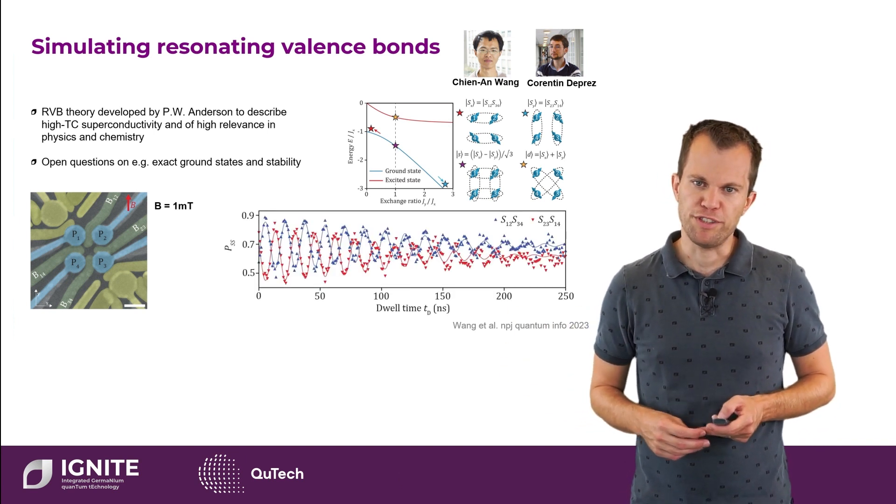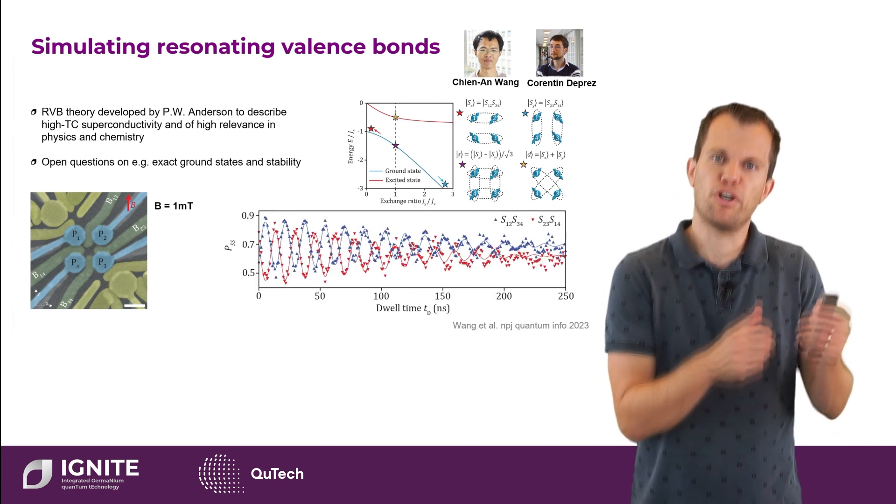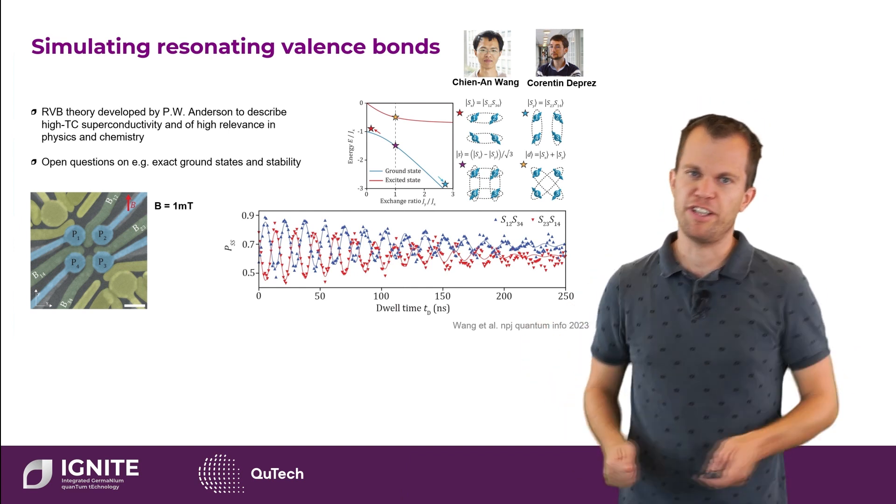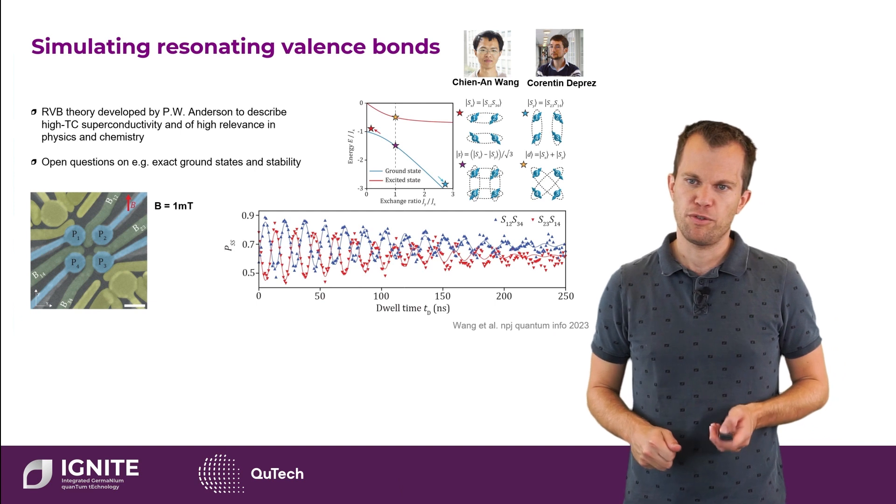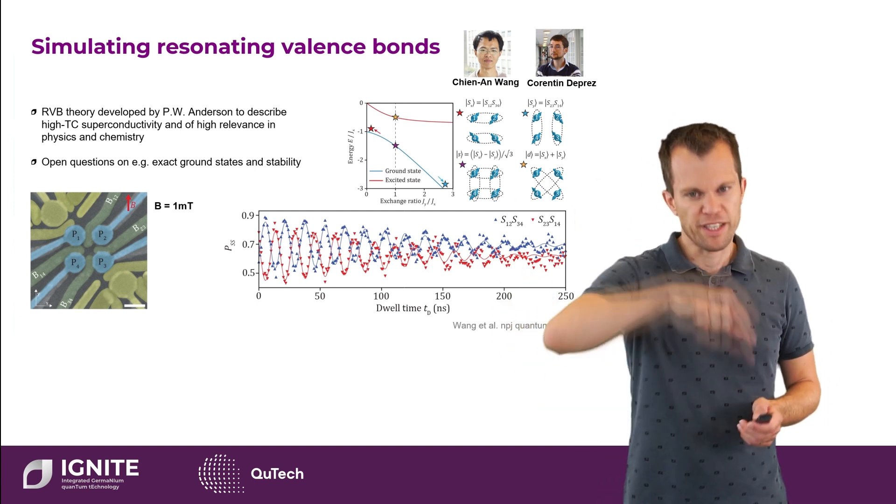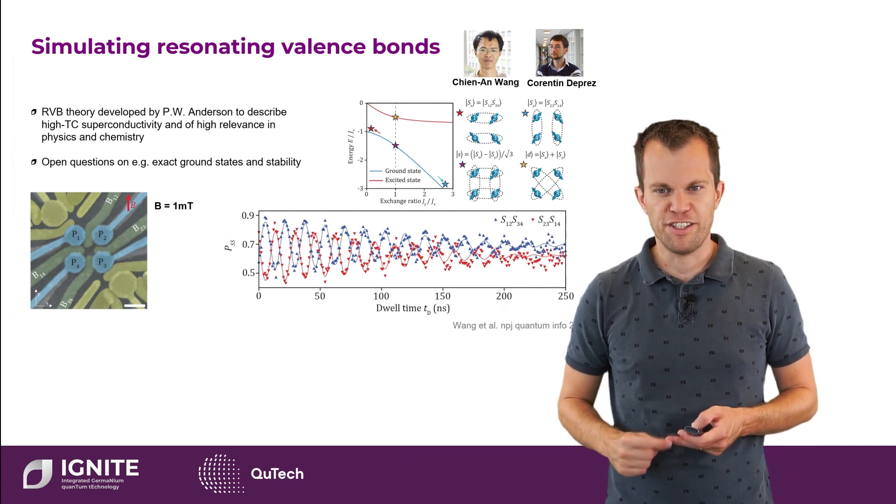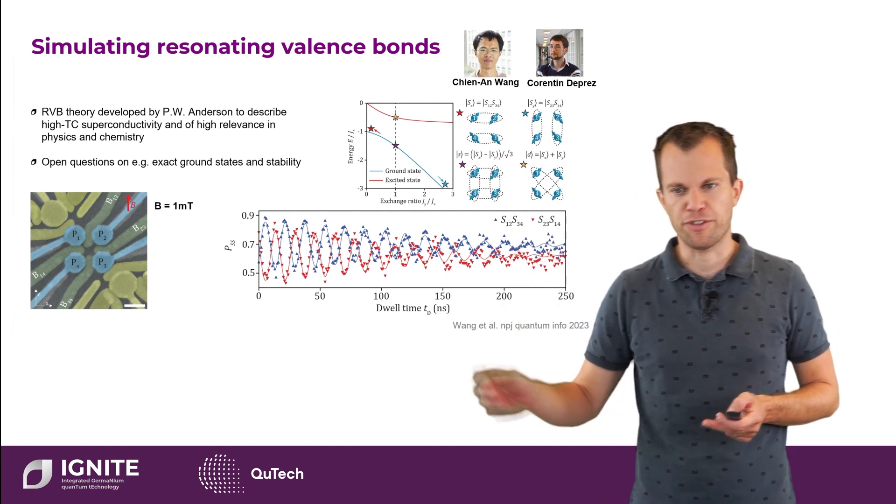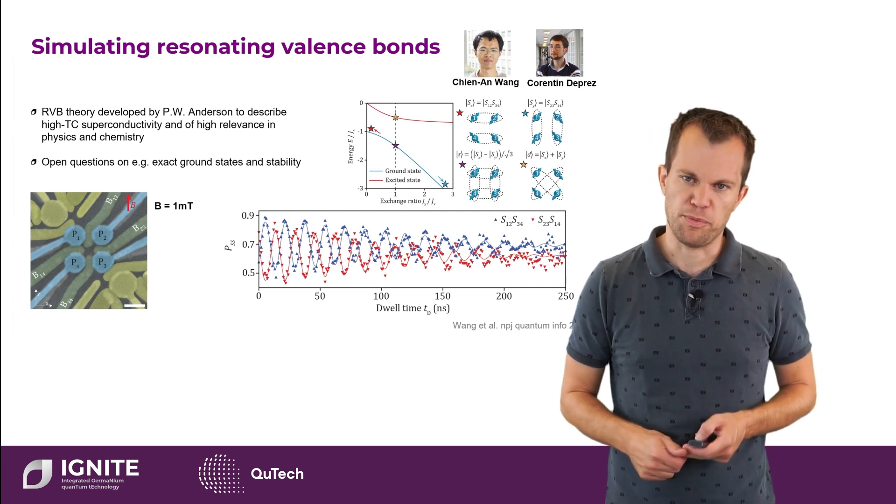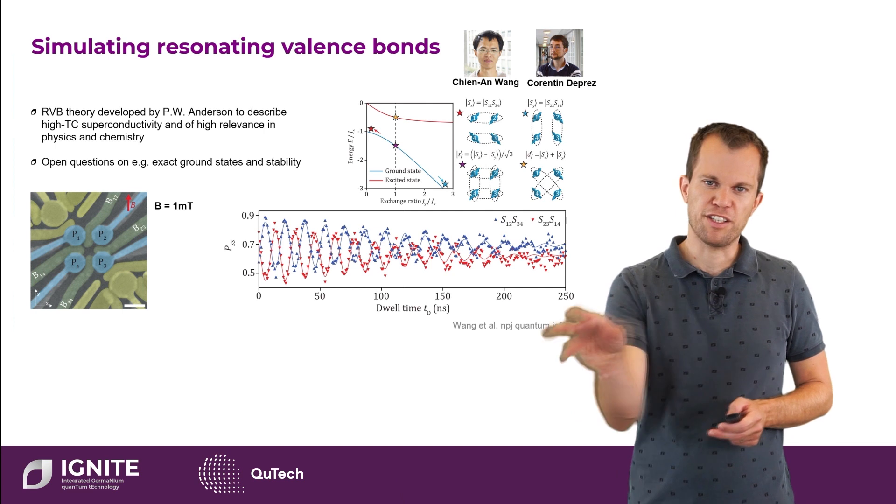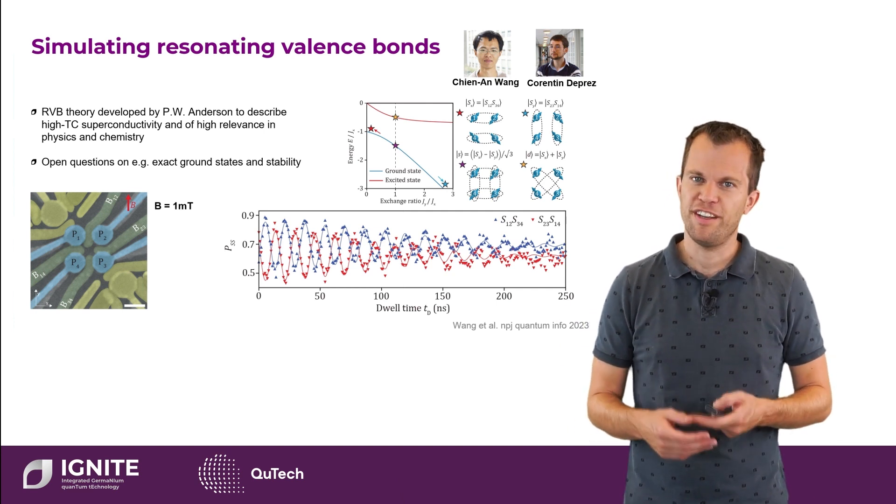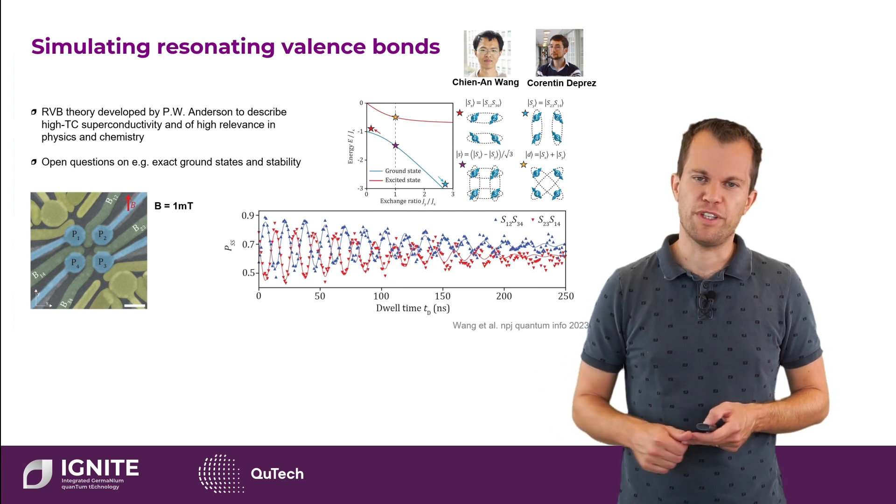So something we can observe by first performing, initializing into singlet states, and then suddenly turning on this exchange interaction to go in this regime where all the exchange interactions are equal. We can see this very nice observation of oscillations throughout. And these are the resonating valence bonds. Now it seems maybe like a small experiment. It's good to understand that it's actually based on quite a few advances.